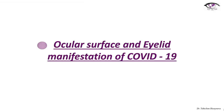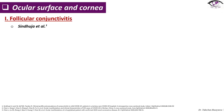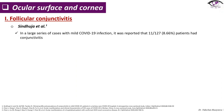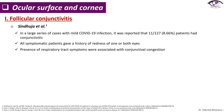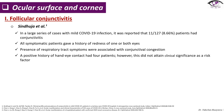Ocular surface and eyelid manifestation of COVID-19. Beginning with follicular conjunctivitis from the publication of Sindue et al.: in a large series of cases with mild COVID-19 infection, it was reported that 11 patients from 127 had conjunctivitis. All symptomatic patients gave a history of redness of one or both eyes. Presence of respiratory tract symptoms were associated with conjunctival congestion, and a positive history of hand-eye contact was noted in four patients, though this did not attain clinical significance as a risk factor.